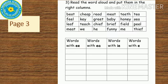This is the third page. Read the words aloud and put them in the right columns. Read along with me, children: beat, feel, leave, meet, cheap, key, teach, we, read, greet, chief, he, meet, baby, breathe.